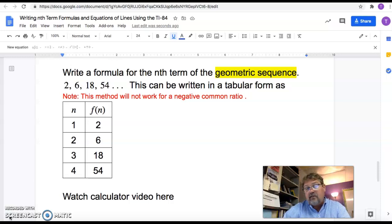So we're going to do basically the same thing. Well, not really the same thing. There's going to be a couple different steps, but for the most part it'll be very similar to what we just did. So write a formula for the nth term of a geometric sequence.